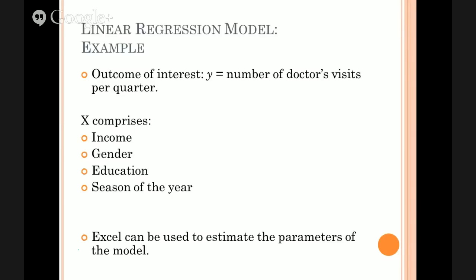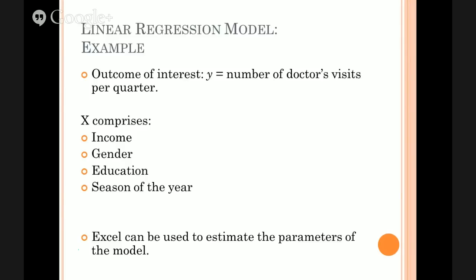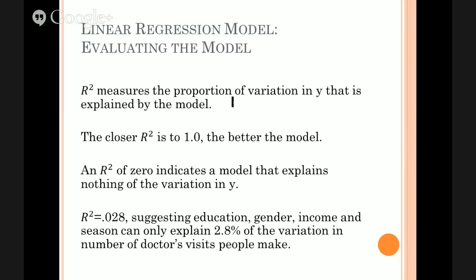To help us think about that, we've got an example where y is the number of visits to the doctor that a person makes over three months, and x comprises a bunch of characteristics of that person: how much income they earn, their gender, how much education they have, and what time of year they were surveyed. The two things we haven't concentrated on before are the R-squared which is 0.0279 and the standard error of 3.757.